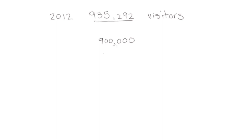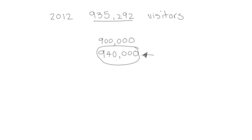If we round to the 10,000s place we get 940,000. That means we're close to the number of visitors but a little over, so everybody would get a map. This is a preferable estimate — being short 35,000 maps would cause a problem, so 940,000 maps would be the better estimate.